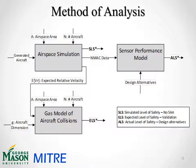Our method of analysis is loosely broken into three parts: the airspace simulation, the gas model of aircraft collisions, and our sensor performance models. I'd like to point out three key metrics: SLS, ELS, and ALS. SLS stands for simulated level of safety — the number of collisions per flight hour from our airspace simulation. ELS, or expected level of safety, is used as a validation output from the gas model of aircraft collisions. Finally, ALS, or actual level of safety, gives the safety level for each design alternative after the sensor performance model.